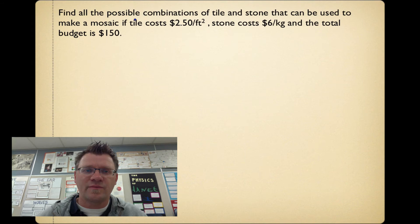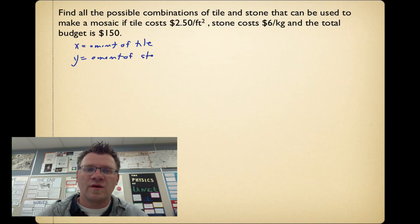Here's our final example. Find the possible combination of tile and stone that can be used to make a mosaic. If tile costs $2.50 per square foot and stone costs $6 a kilogram, and the total budget is $150. So if I said x is going to be the amount of tile and y is going to be the amount of stone, then the inequality that we're going to create here is 2.50 times x, which is the amount of tile multiplied by the price of the tile.